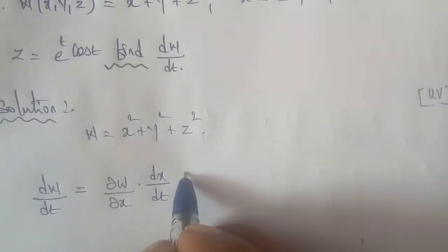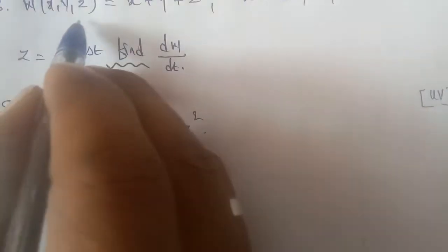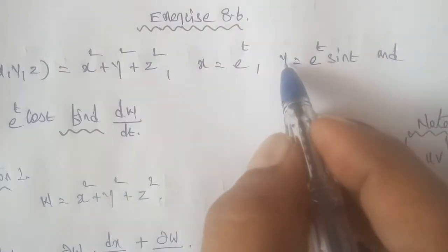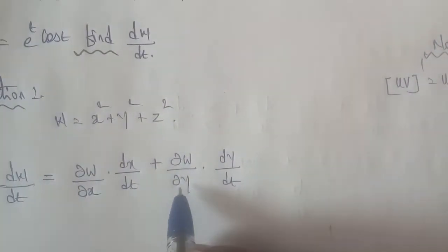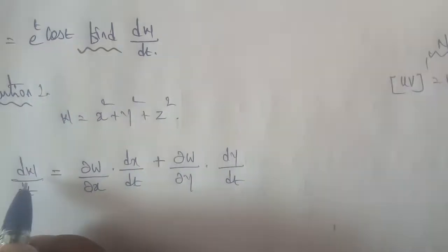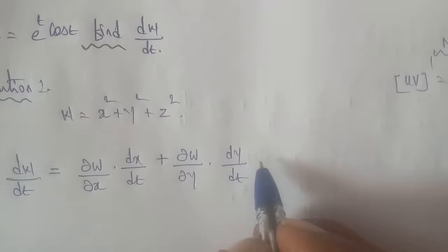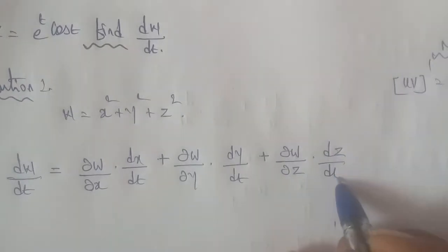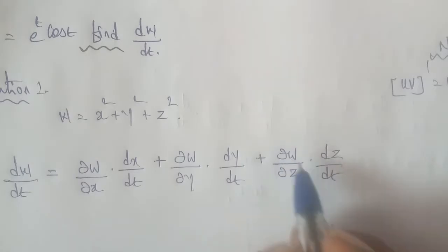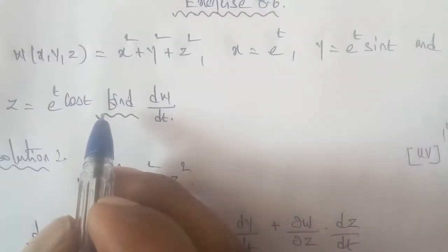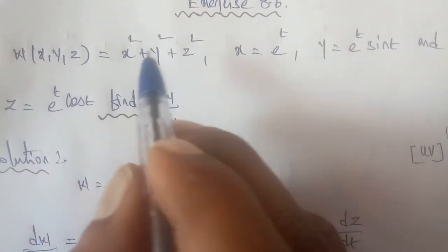Writing in the chain rule format: dw/dt equals (∂w/∂x)(dx/dt), plus (∂w/∂y)(dy/dt), plus (∂w/∂z)(dz/dt). Now we find ∂w/∂x, ∂w/∂y, and ∂w/∂z. Since w = x² + y² + z², these are separate terms, making partial differentiation straightforward.